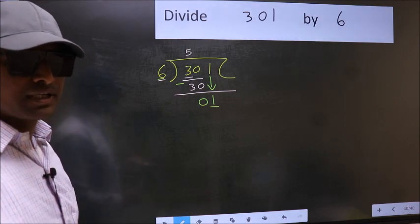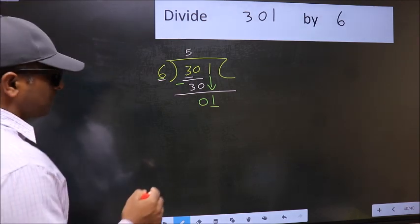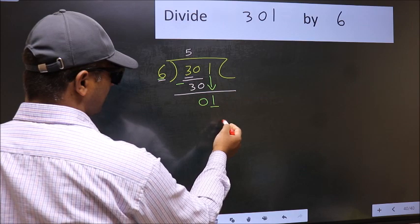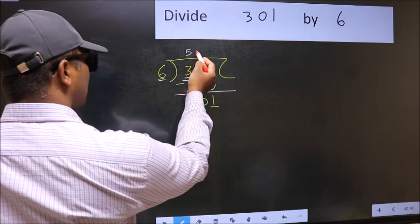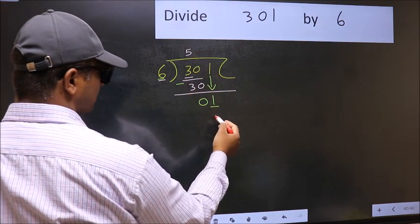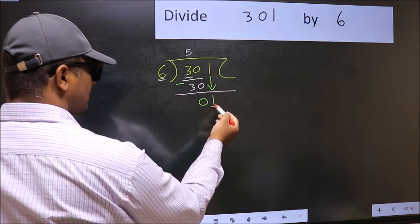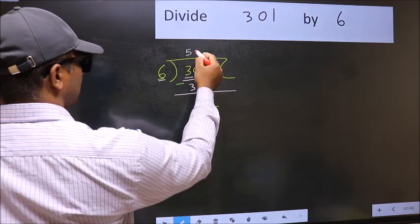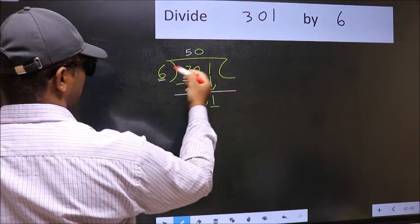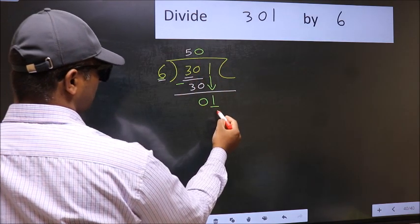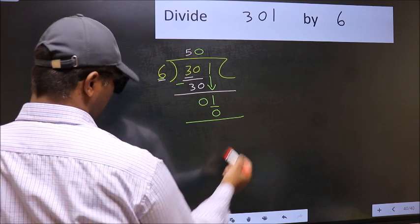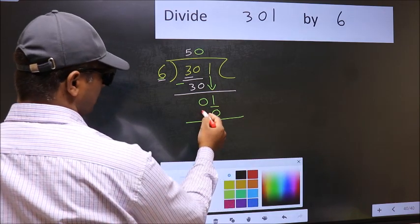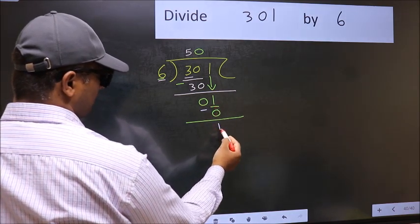Instead, what you should think of doing is what number should we write here. If I take 1 here, we will get 6. But 6 is larger than 1. So what we should do is we should take 0. So 6 into 0 is 0. Now you should subtract. 1 minus 0 is 1.